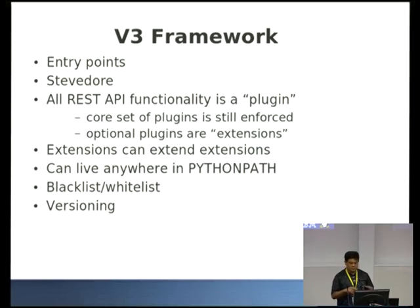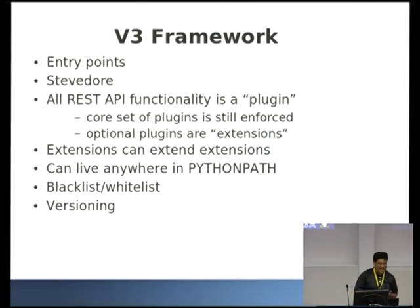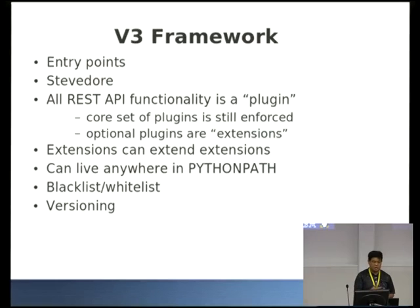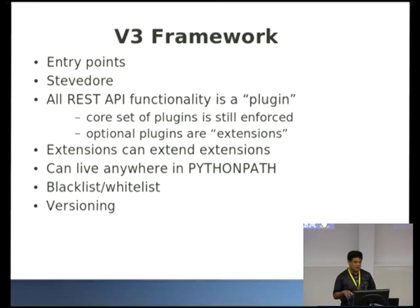We're still pinning down exactly what's going to be core and what's not — we've added a bunch of stuff and taken a bunch out. Key pairs is definitely in. Extensions can now extend other extensions quite easily, so you can design your extensions to have further entry points, which makes things a lot cleaner with minimal changes to even core extensions. They can live anywhere in the Python path now, and there are ways of blacklisting and whitelisting what extensions you want loaded, which will make life easier for operators when they upgrade so they don't accidentally get new functionality they didn't intend.